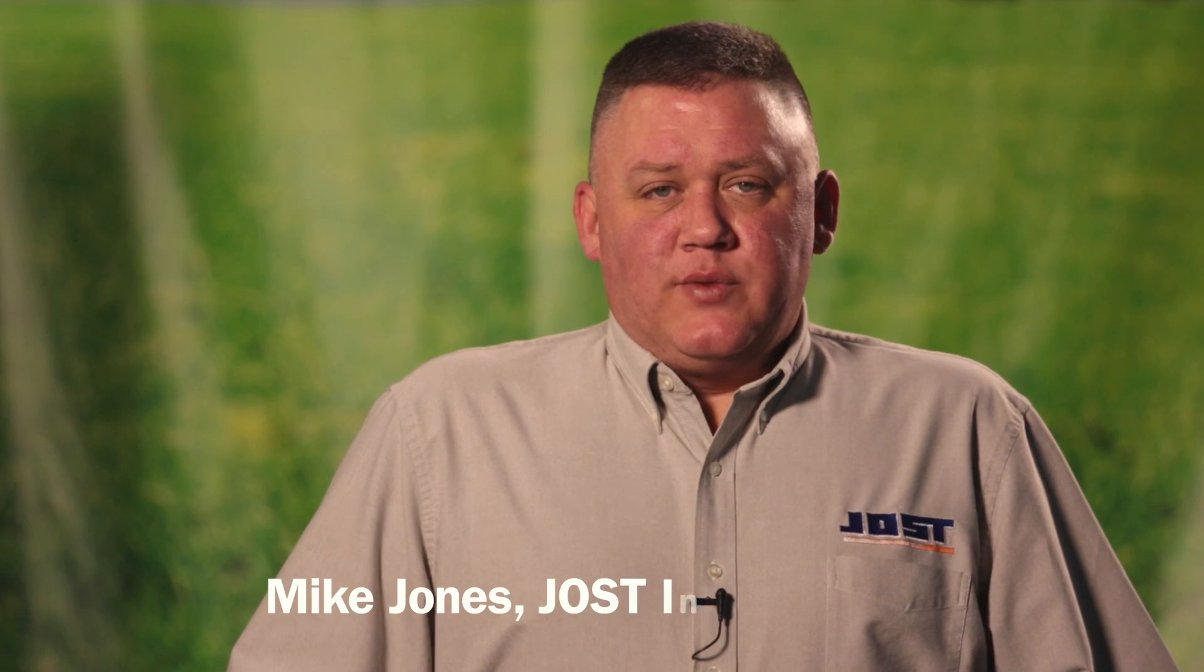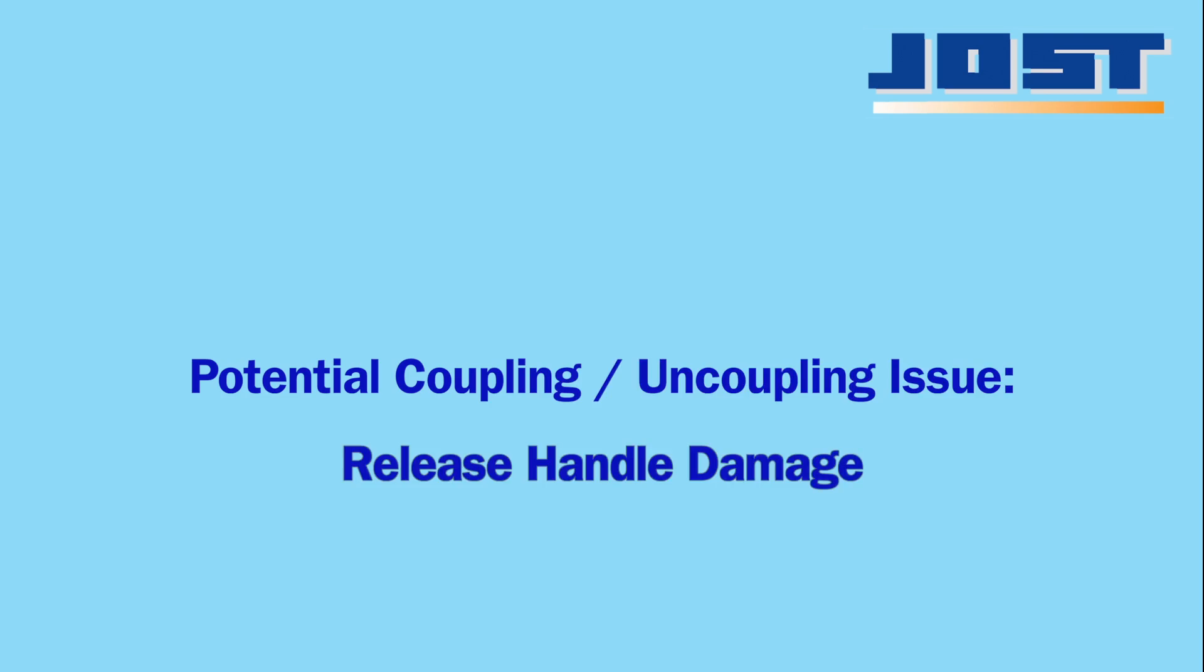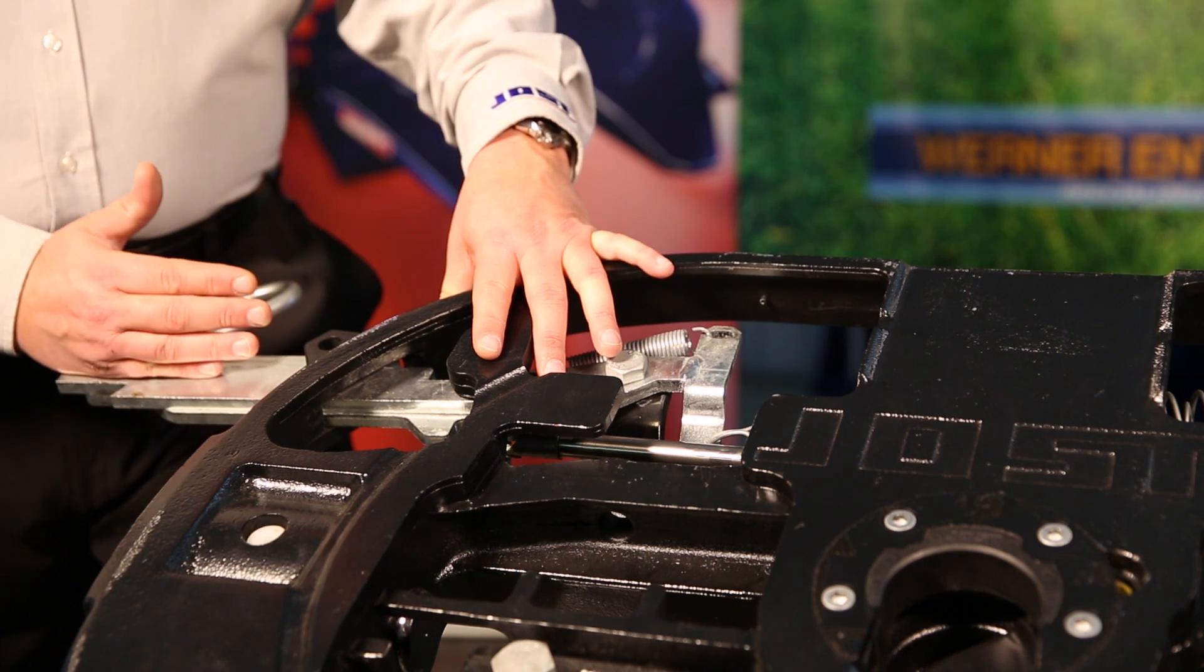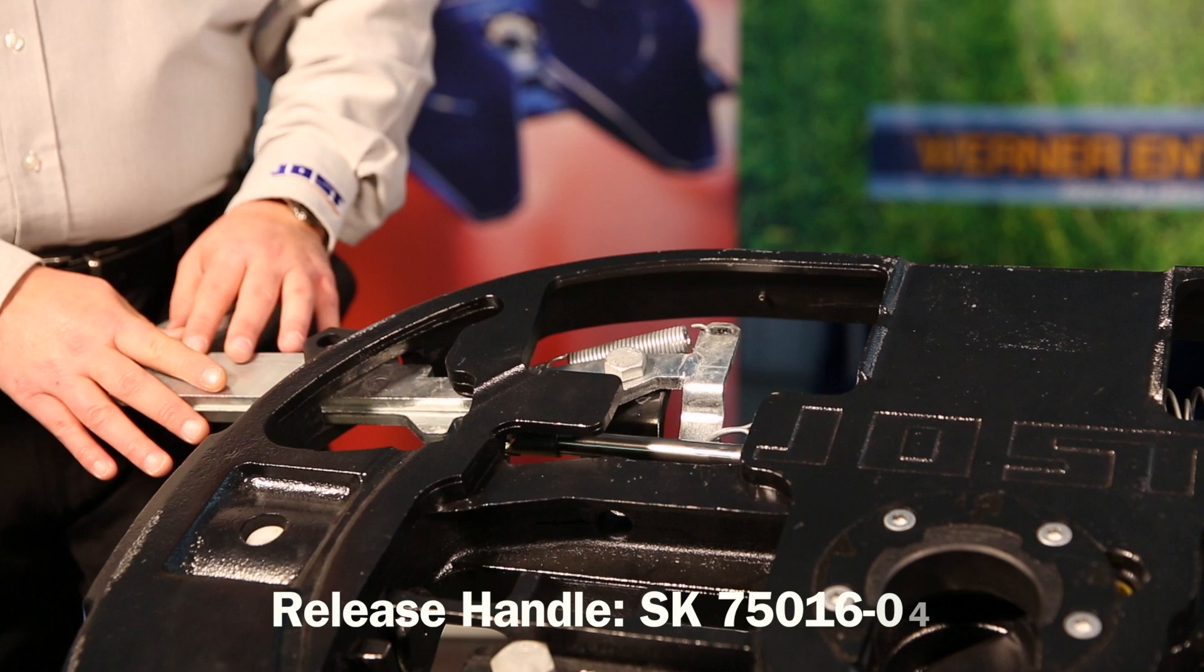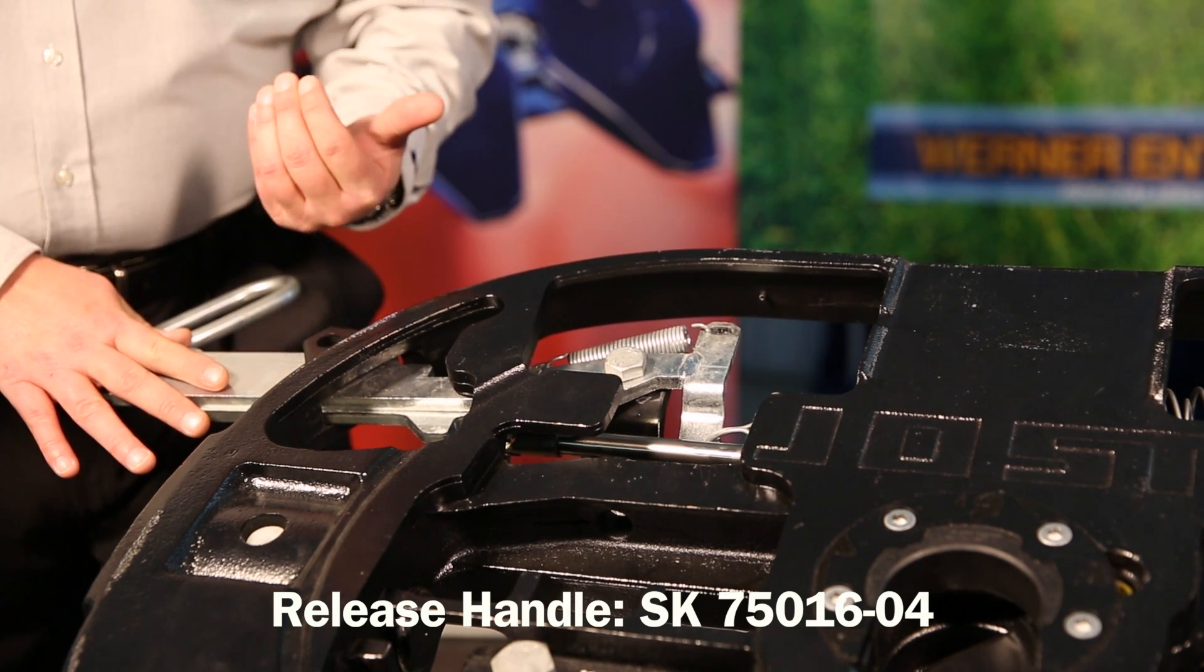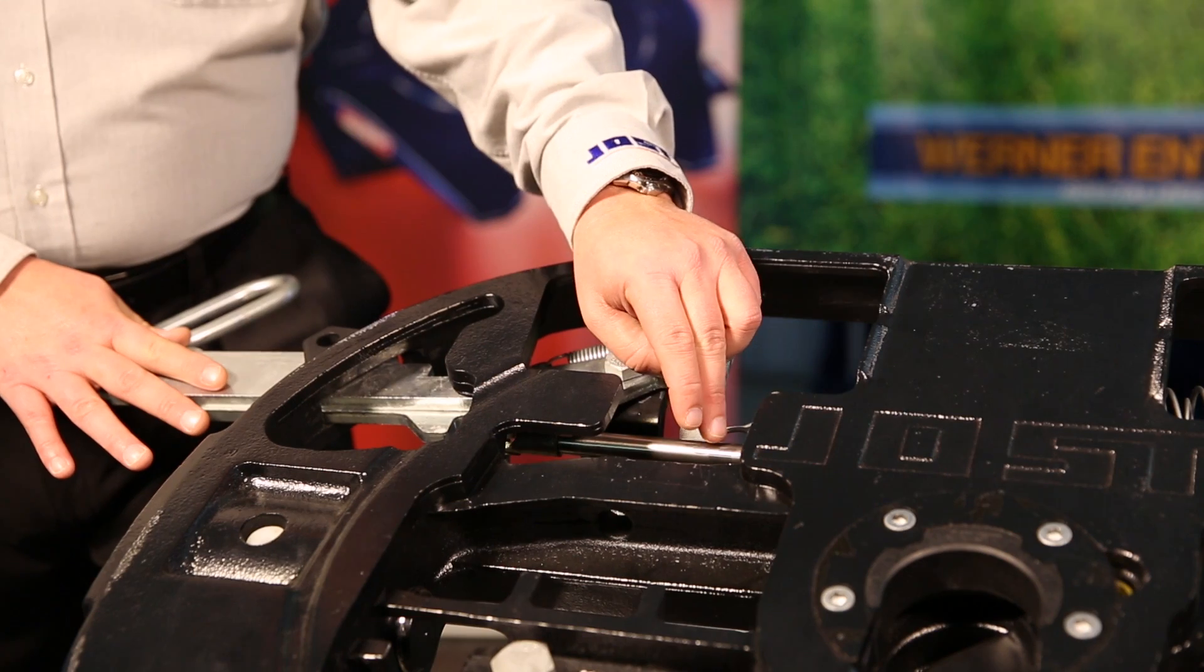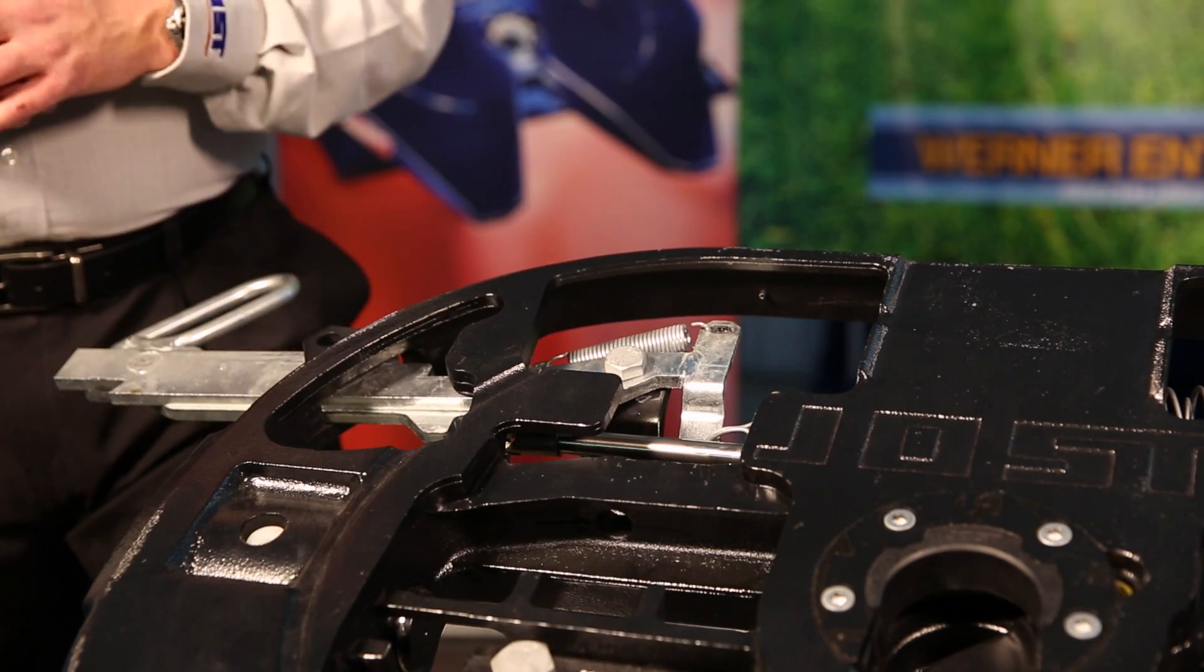I'm Mike Jones with Jost International. I'll be taking you through this series with the air release fifth wheel. If you are having issues coupling, you want to check the release handle and make sure it has not been damaged. The damage also might not be limited to the release handle, so you also want to check the air cylinder and release arm to make sure they have not been damaged.